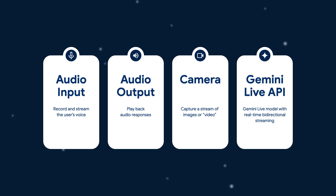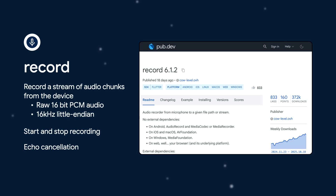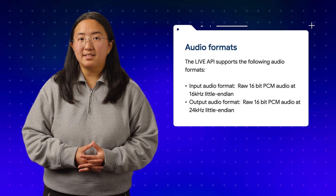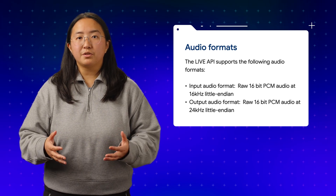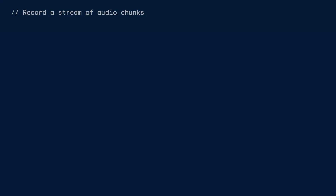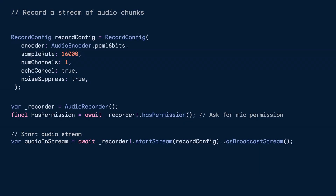Where else would I find building blocks for all these features other than pub.dev? First, I wanted to record a stream of audio from the microphone, which is very well supported by the record package. Gemini's Live API has specific audio formats that are supported, so I had to make sure my app's audio configuration matched up. I'm making sure to match Gemini's input audio format by recording 16-bit PCM audio at a 16K sample rate, and I also enabled echo cancellation and noise suppression to get the best audio possible.